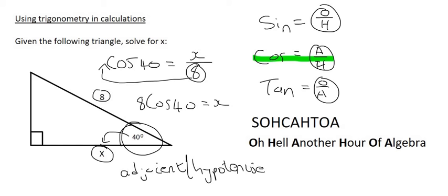And so you type all of that in on the calculator, and that's going to give us a value of 6.13, if we round to two decimal places. So that means this length over here is 6.13.